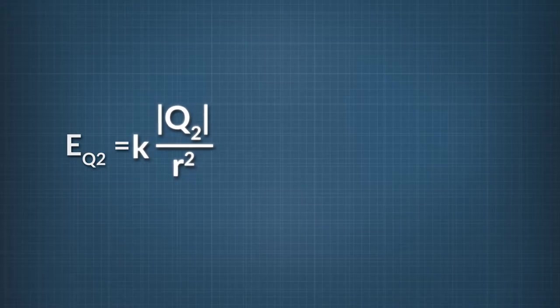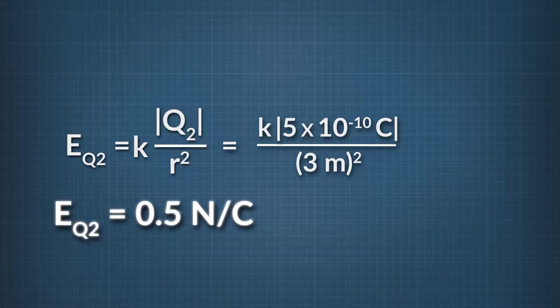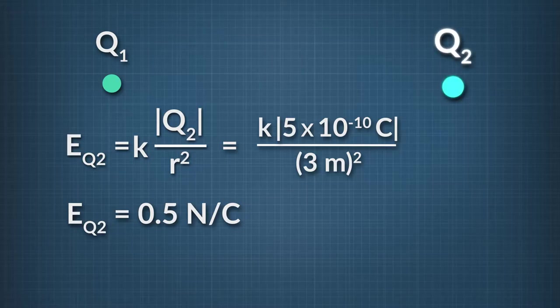To find the field at Q1 due to Q2, use the same equation but use the charge for Q2. This gives us a field strength of 0.5 Newtons per Coulomb. The electric field doesn't depend on the charge where the field is felt, only on the charge that creates the field.